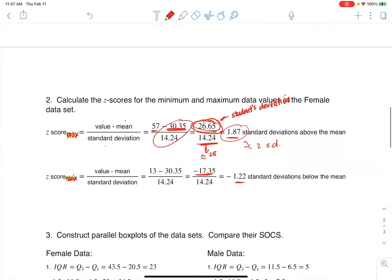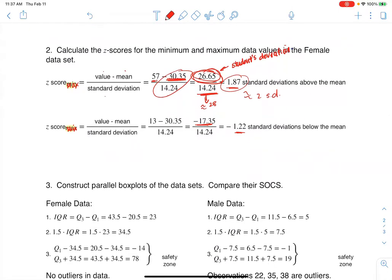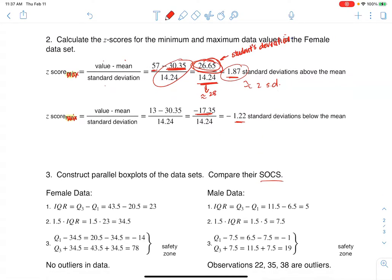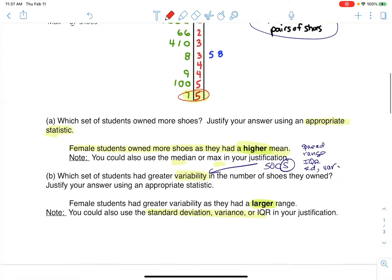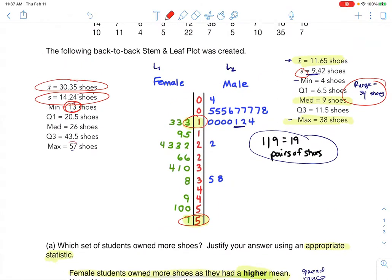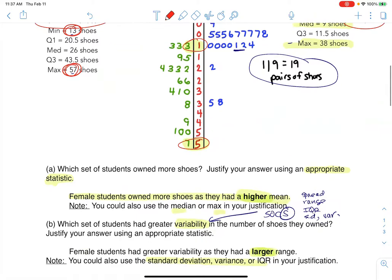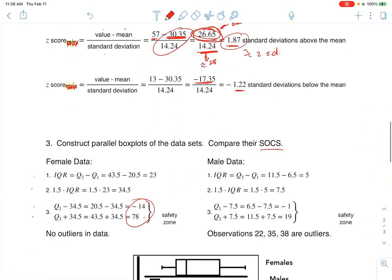The next thing I asked us to do was construct box plots, parallel box plots, two of them, and let's compare SOCS. So the first thing you have to do anytime you want to make a box plot is get your safety zone. So if I find my safety zone, again, find the IQR, multiply it by one and a half, subtract it from Q1, add it to Q3, there is my safety zone on the female side. So you can see it was from negative 14 to 78. Now I'm going to scroll up. If I think about the max and the min, the min was 13 and the max was 57. So if I head back down here, 13 and 57 are inside the safety zone. So I had no outliers.